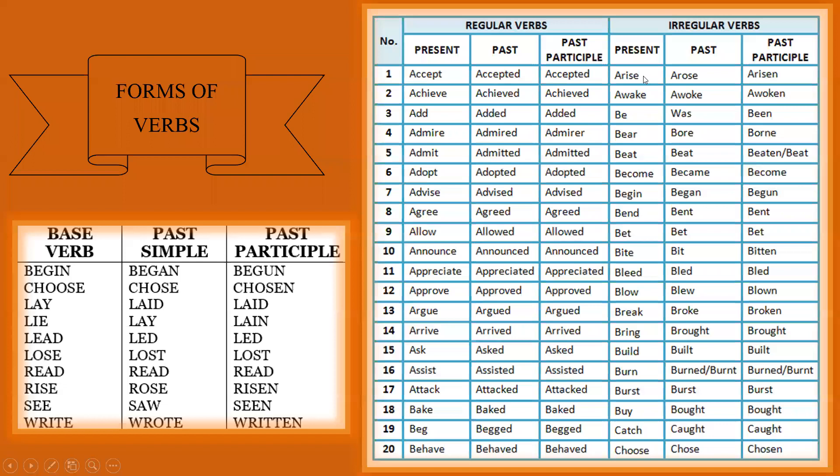Here we are going to explore the three forms of verbs. Verbs are action words that tell us what someone or something is doing. Verbs can have different forms depending on the tense or the action being described. We will learn about the base form, the past tense form, and the past participle form. The base form of a verb is the most basic form — it's like the verb in its dictionary form. We often use the base form with the word 'to' in front of it, like to run, to eat, or to dance.